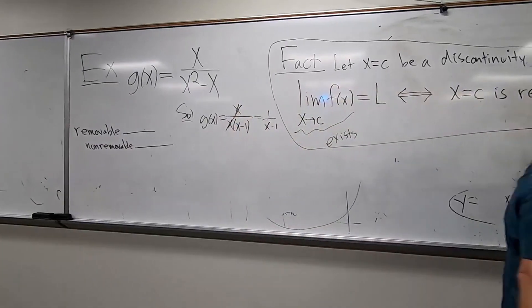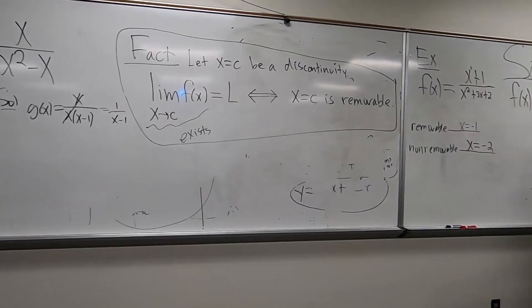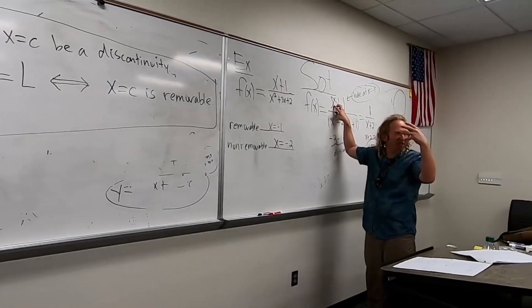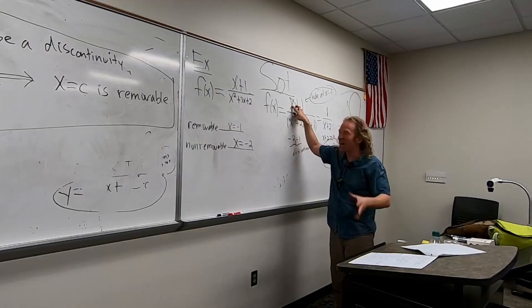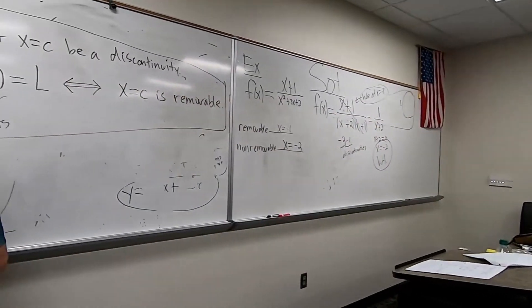So here, negative one makes this zero, right? So if it was like X minus seven, then it would be seven. If it's X plus four, it's negative four. If it's X minus nineteen ninety-nine, then it's nineteen ninety-nine. So here, the hole is at zero.